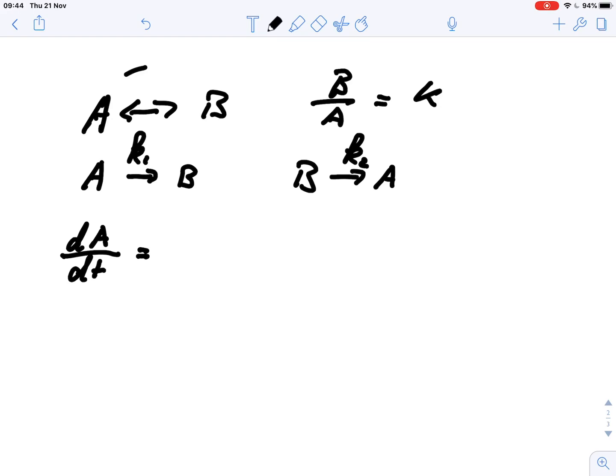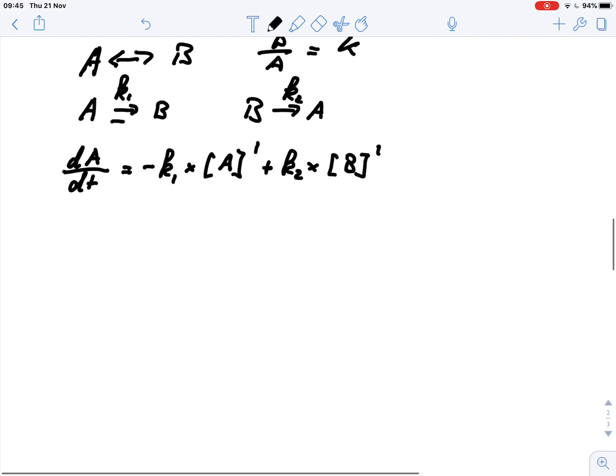We look at the consumption of A, that's this reaction. So we would have minus k1 times A, and we know it's a first-order reaction. But at the same time we also get A produced, so plus k2 times B to the power of 1, because again we know that this is a first-order reaction.